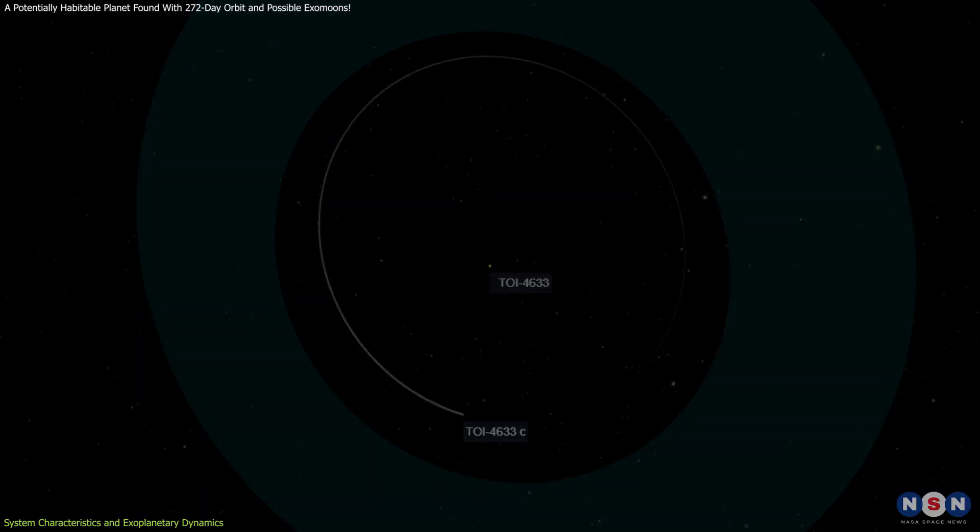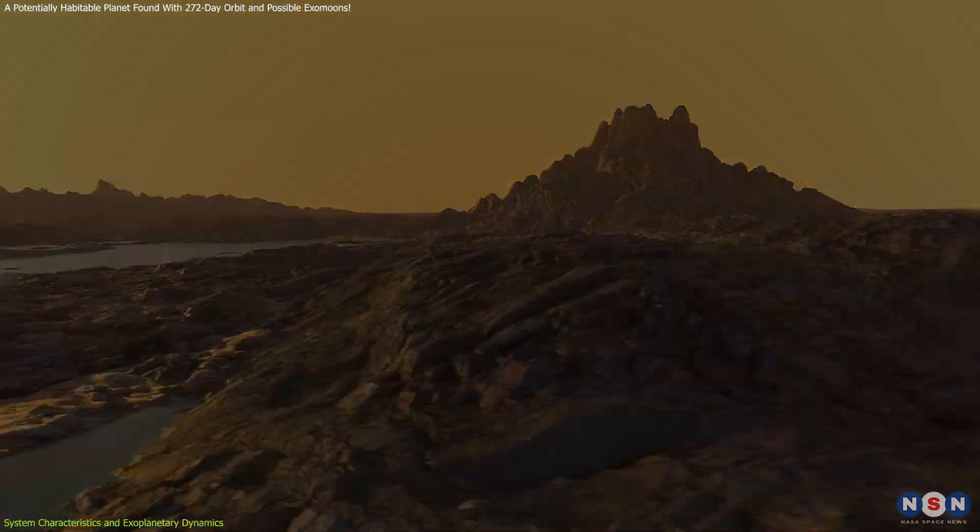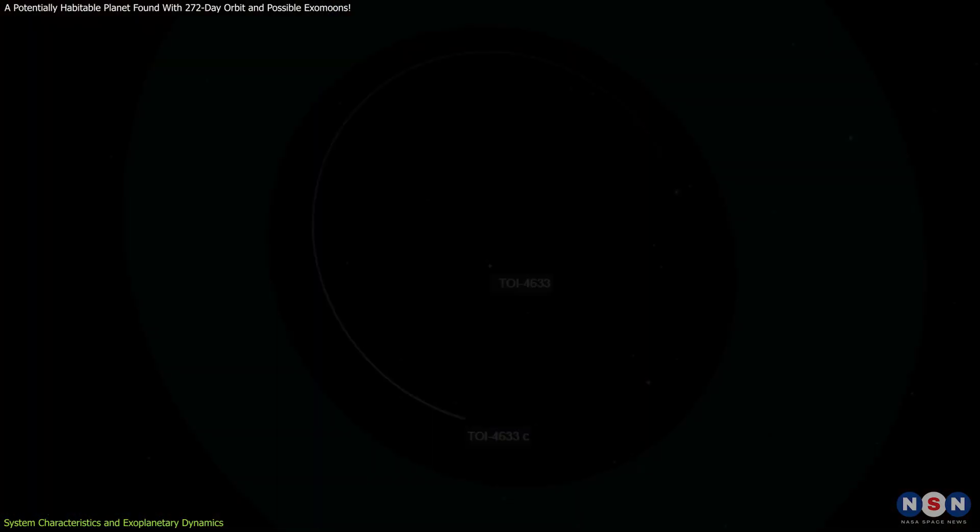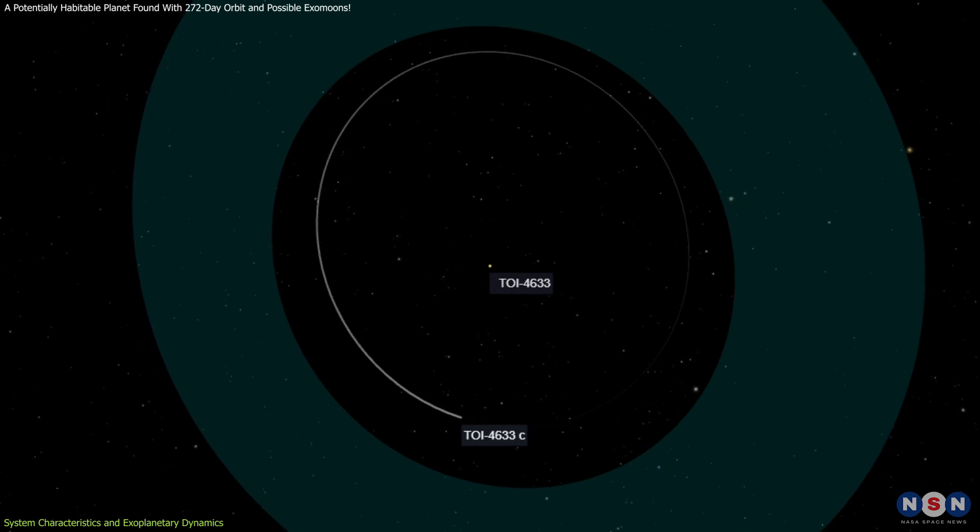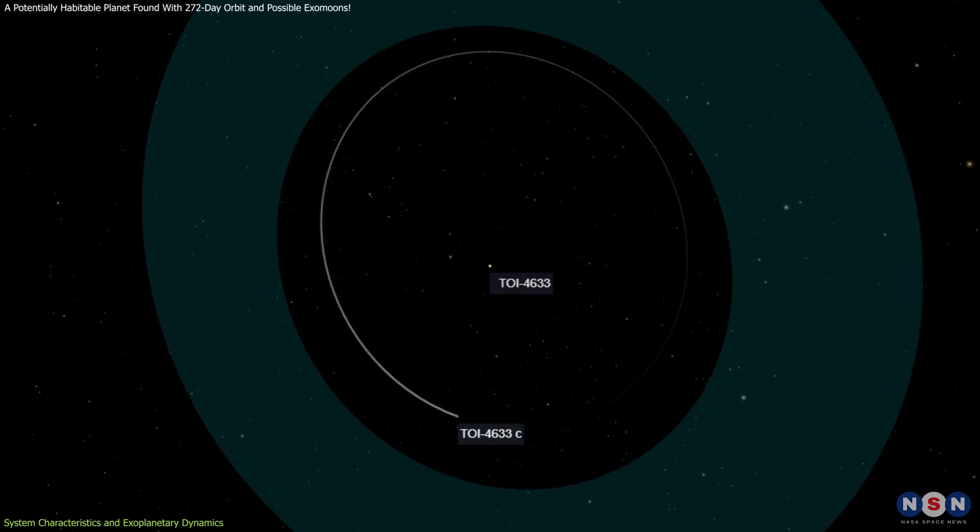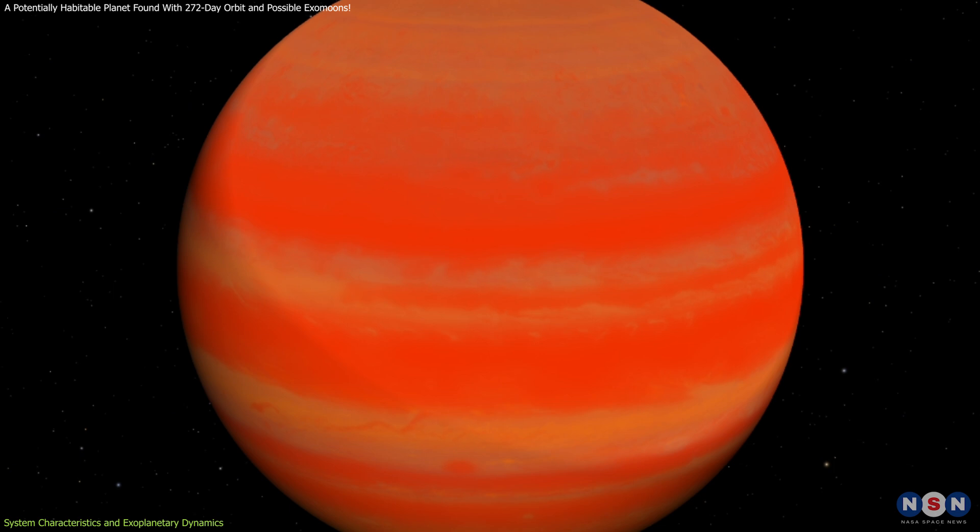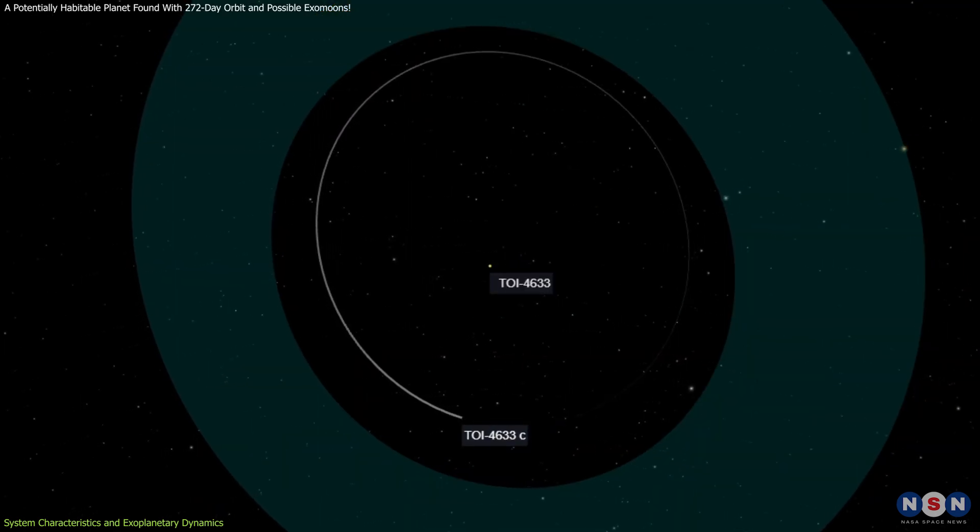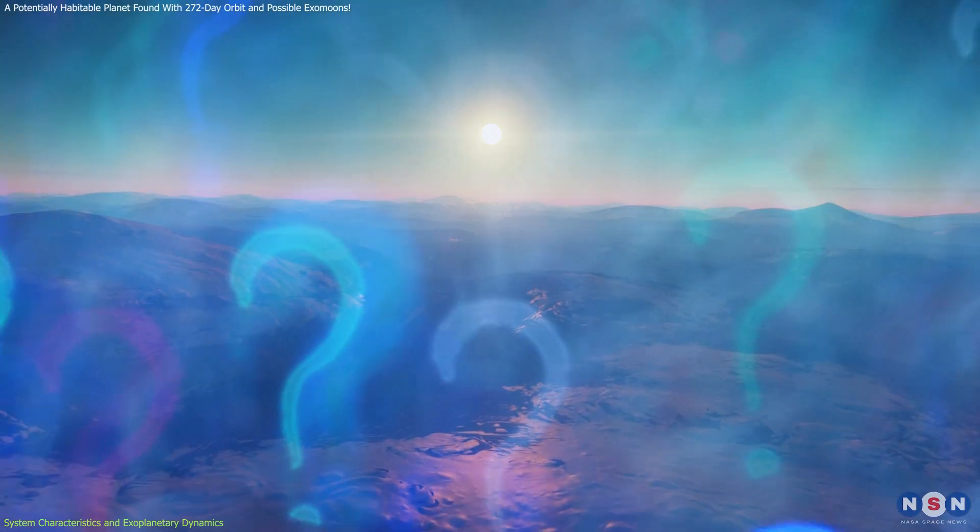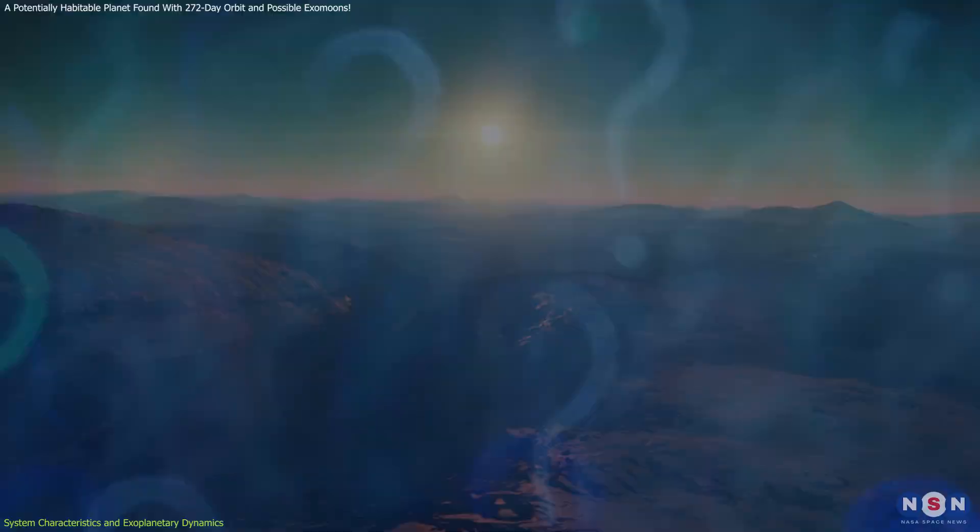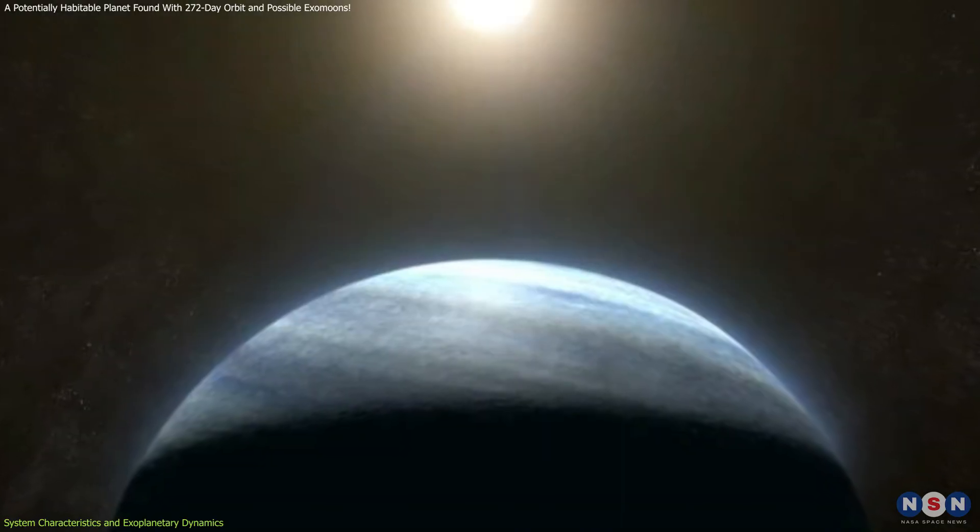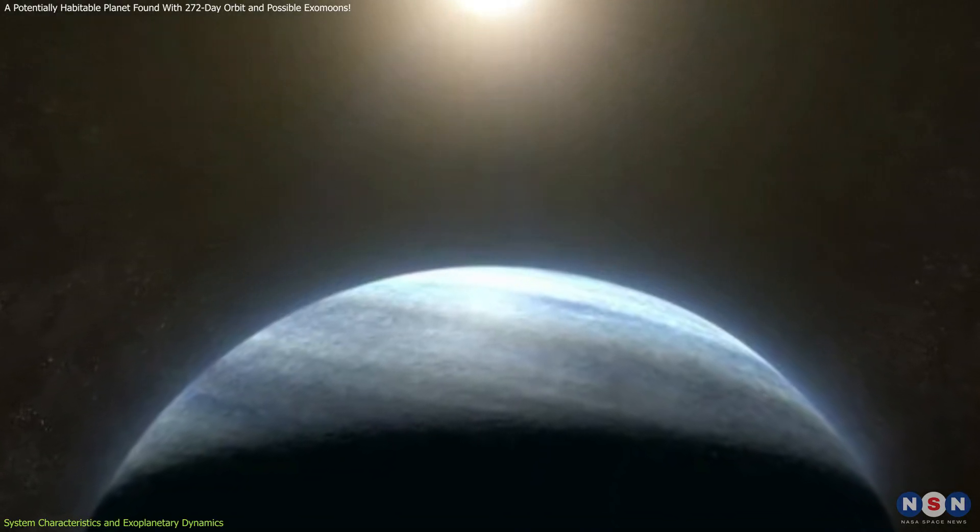The habitable zone, where conditions may be right for liquid water to exist, is a crucial area of interest in exoplanet research. The exoplanet's location within this zone is particularly significant. Despite being a Neptune-like planet with no solid surface, its position in the habitable zone raises intriguing questions about the potential for habitability and the presence of water in its atmosphere. That's why the composition of its atmosphere is a key area of interest.